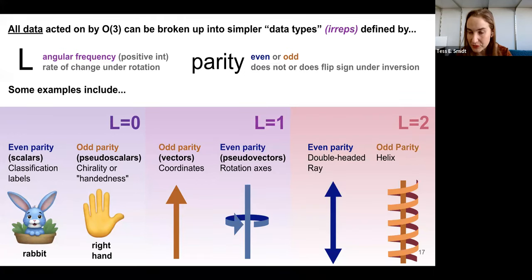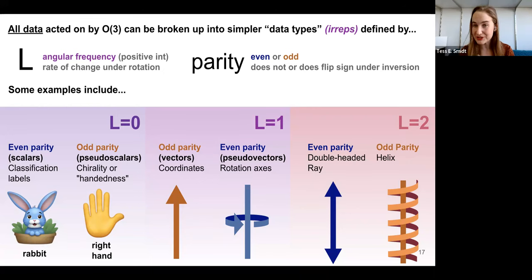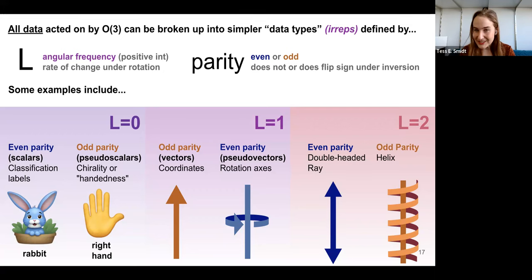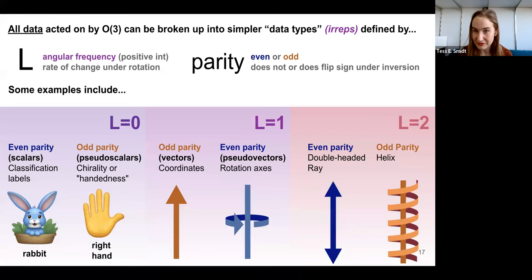Let me give concrete examples. Things with zero angular frequency don't change under rotation. There are two: even parity, which are scalars — things like energy, mass, classification labels — and odd parity, which are pseudoscalars. An example of a pseudoscalar is identifying a right hand: if you mirror it, it becomes a left hand, flipping sign when you perform an inversion operation.